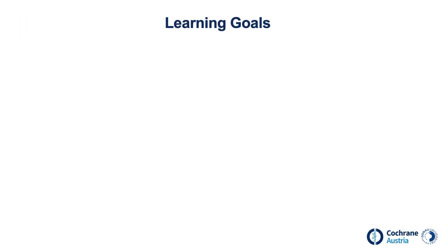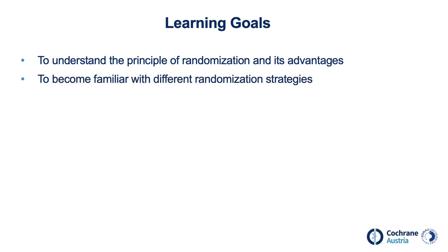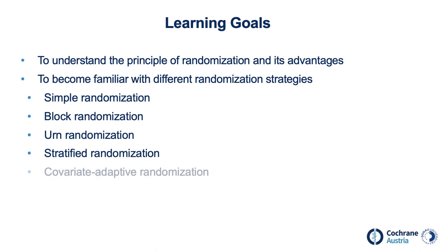The learning goals of this video are to understand the principle of randomization and its advantages, and to become familiar with different randomization strategies. These are simple randomization, block randomization, urn randomization, stratified randomization, covariate adaptive randomization, and minimization.